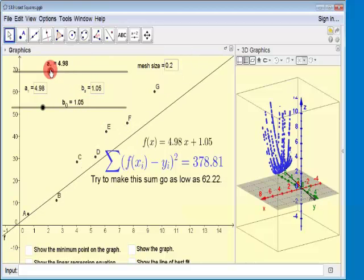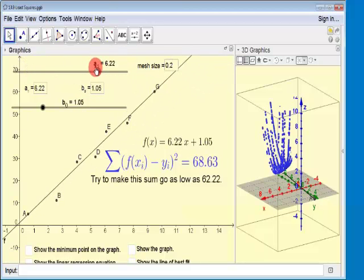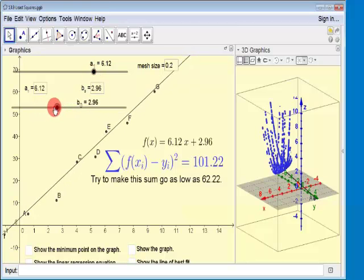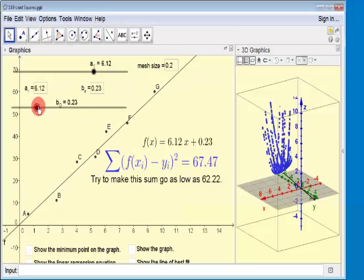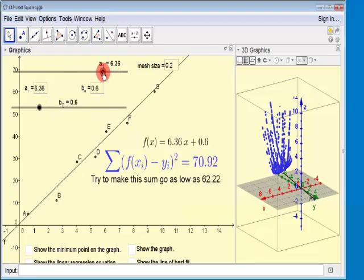Does it look like each time the line is lining up a little bit better? And we want the line of best fit, and that's the line that minimizes the sum of the squares of the vertical distances between points on the line and the data points. Will it go as low as 62? Give me a 65 point something. Can we go lower? Did you see a 64 point something? Yes.